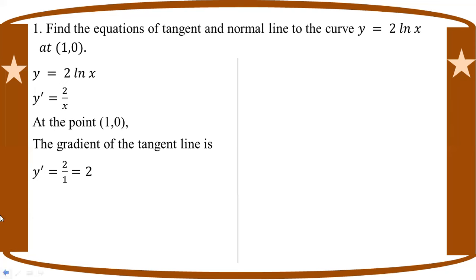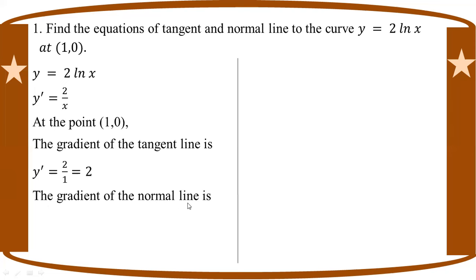The gradient of the normal line is negative 1 over y prime, equal to negative one-half.